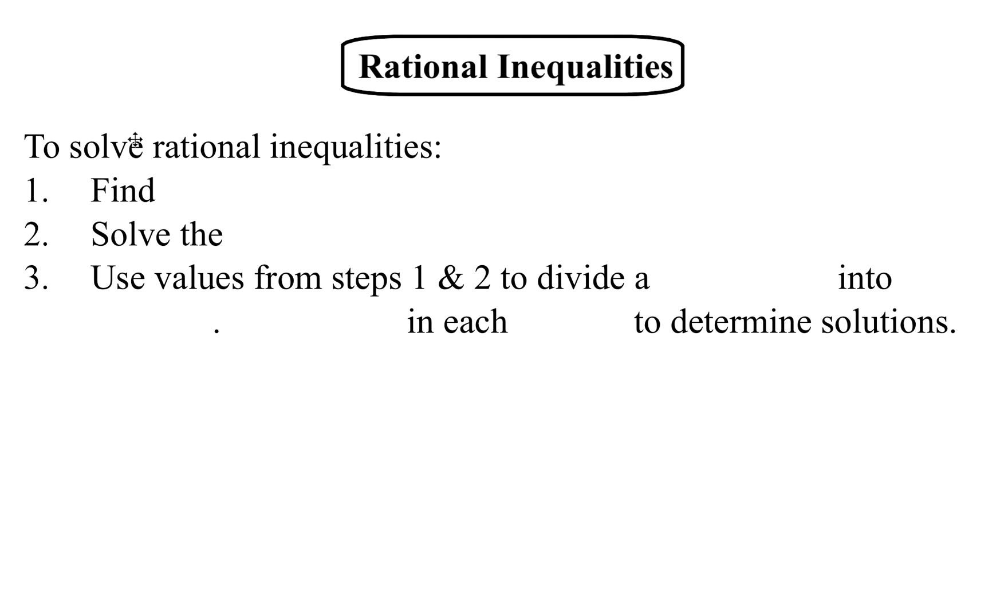All right, to solve rational inequalities, we have three steps we're going to follow. So the first thing we're going to do is to find our excluded values. Those are the ones that make denominators 0. Then we're going to go ahead and solve the related equation. So these will be inequalities, and we're going to replace the inequality sign with an equal sign and solve it.